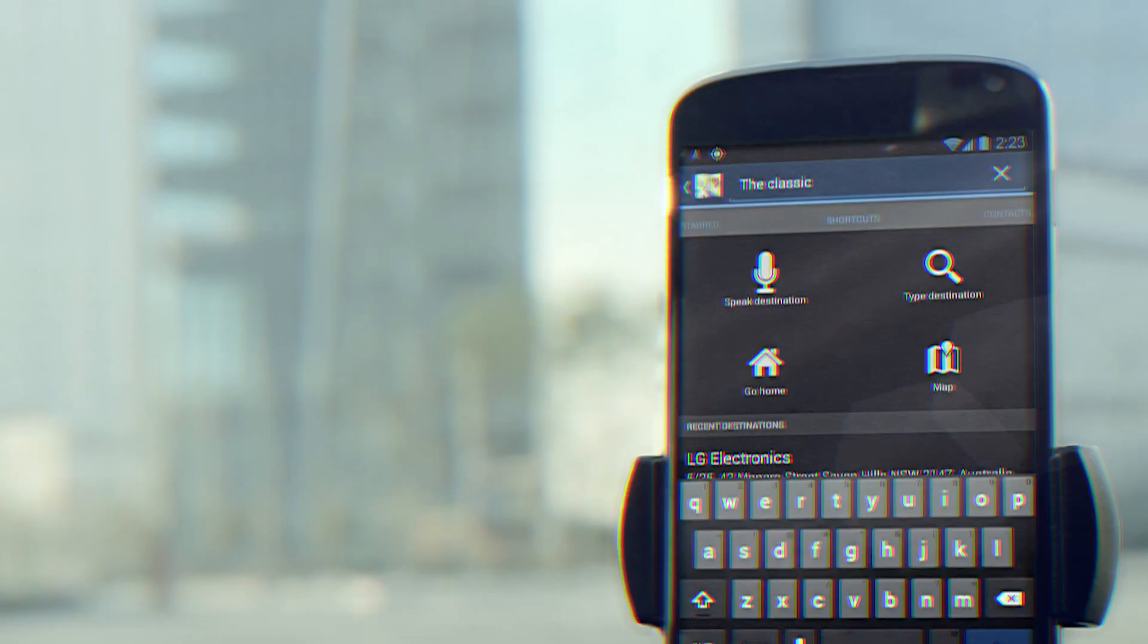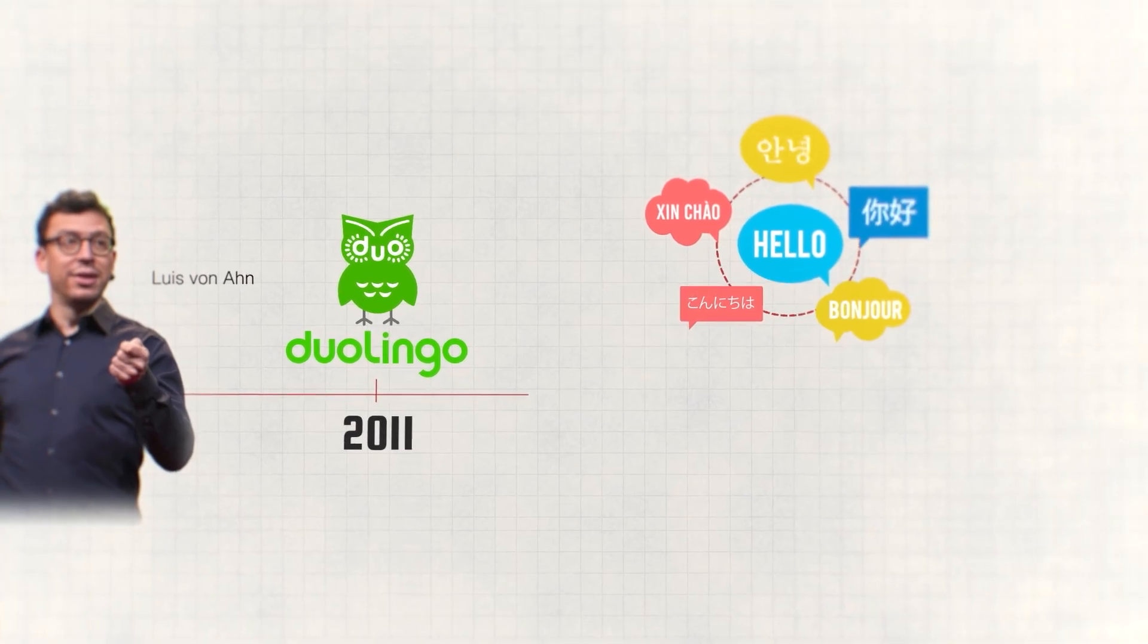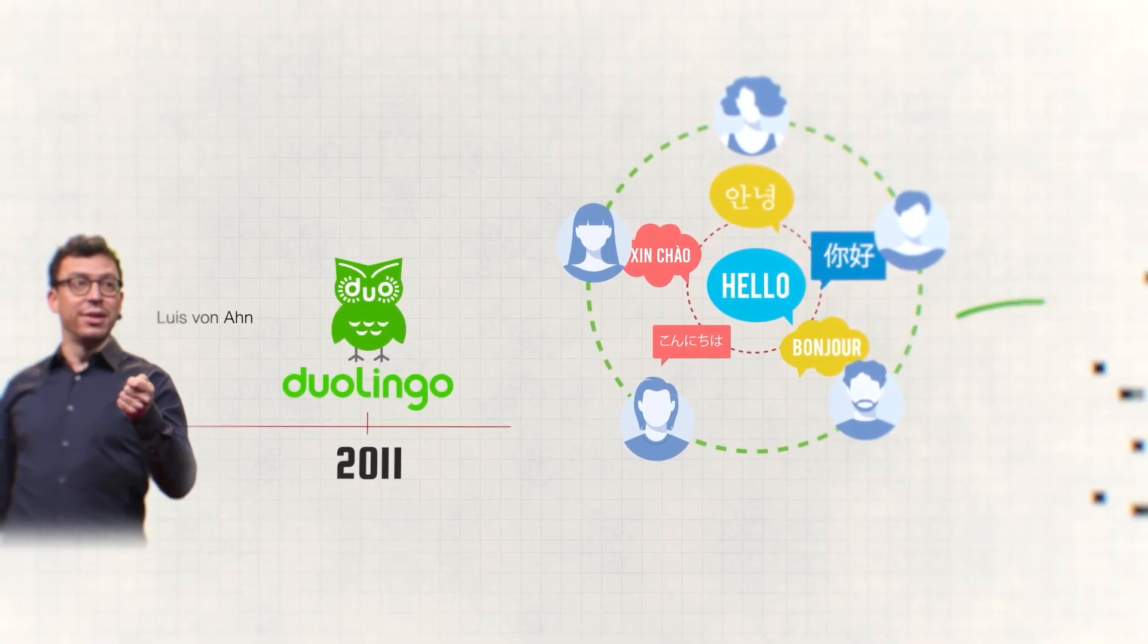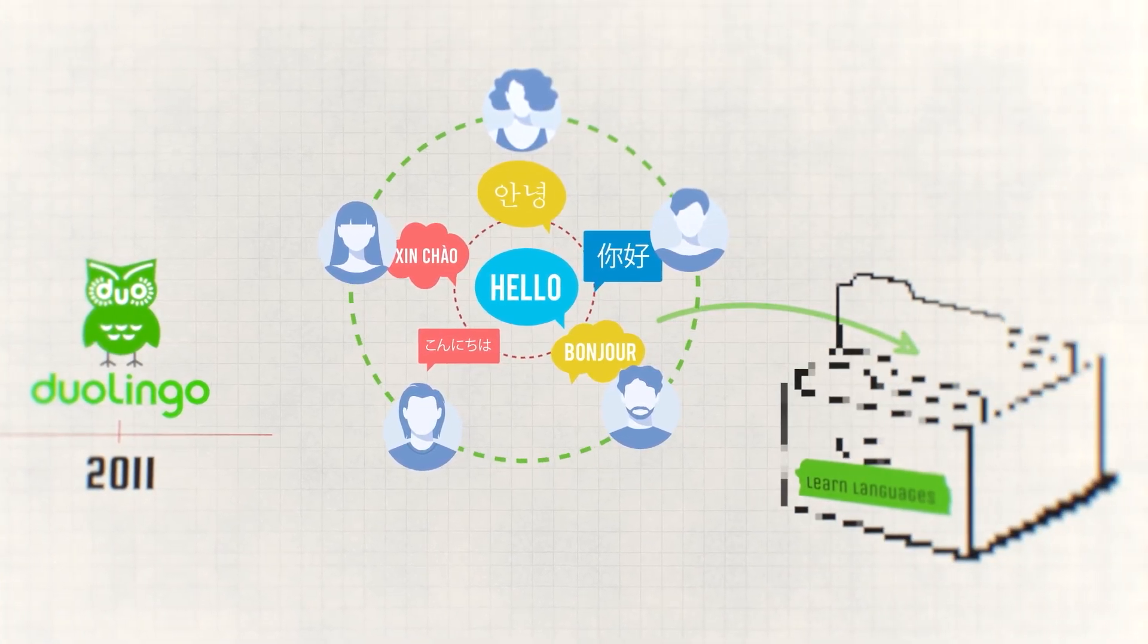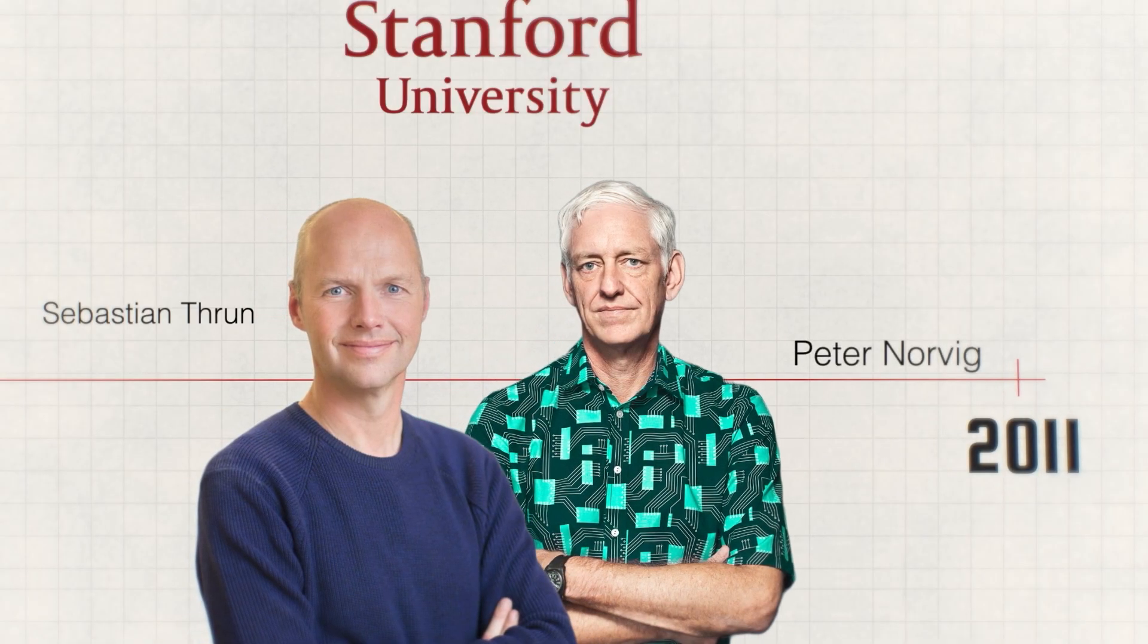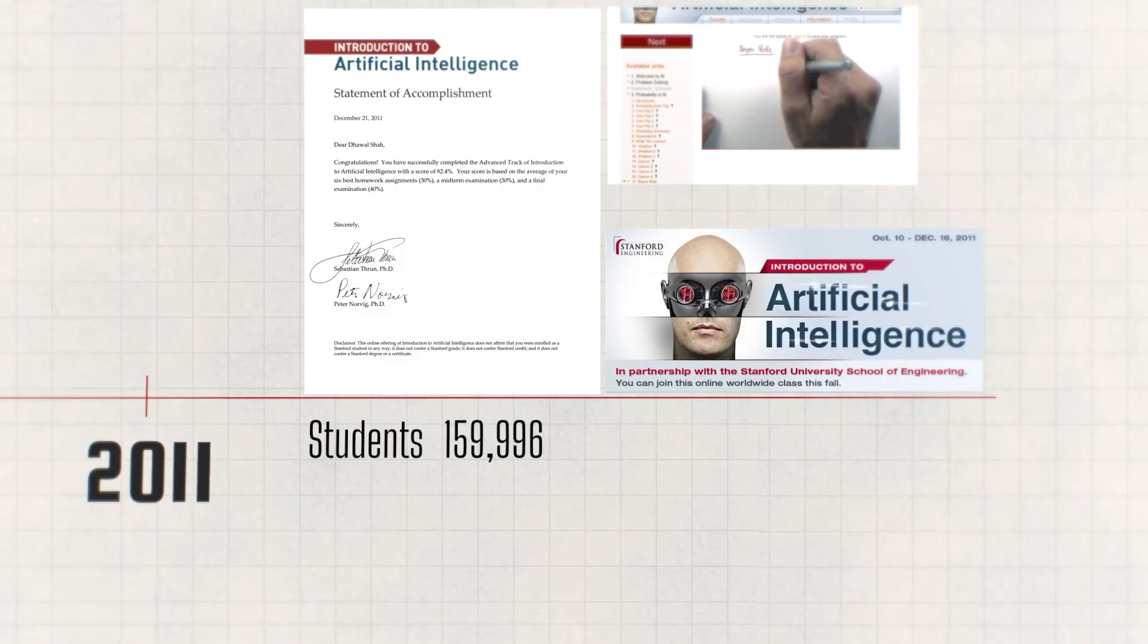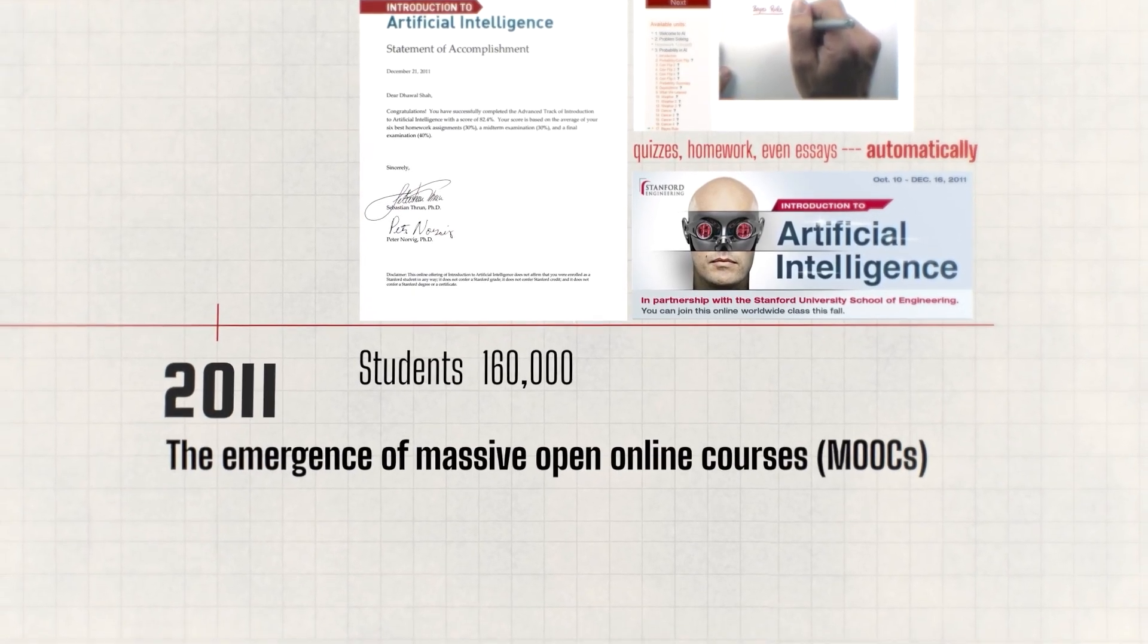So inspired by the newfound global access to the internet created by Chromebooks and the smartphone, a Guatemalan-American computer scientist named Luis Fanon decided to launch Duolingo in 2011, a platform to help people learn new languages easily. But it's not just a language app. It's an AI Trojan horse. Because every exercise completed by 500 million users trains Duolingo's algorithms to understand how humans actually learn languages. So in 2012, two Stanford professors, Sebastian Thrun and Peter Norvig, put their AI course online. And within weeks, over 160,000 students enrolled. So they build an AI to grade everything. Quizzes, homework, even essays. One class teaching the entire world automatically.